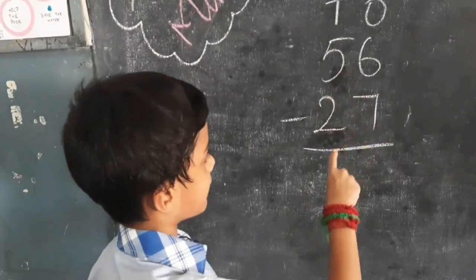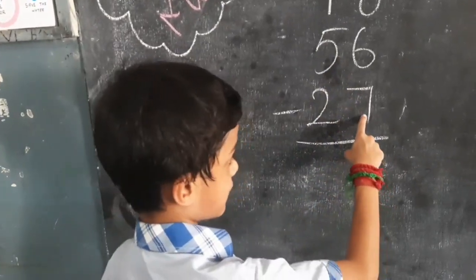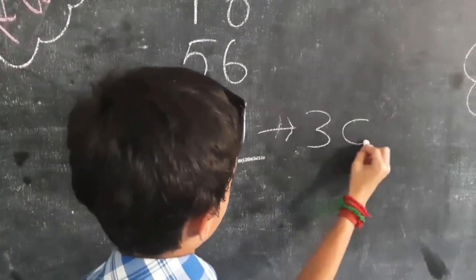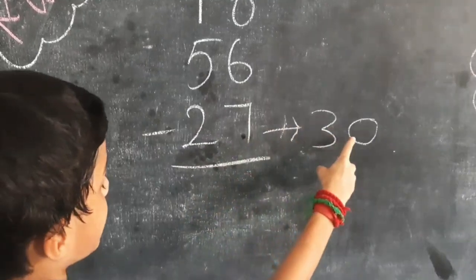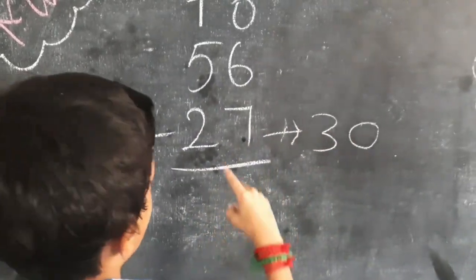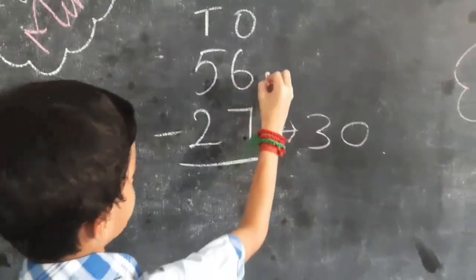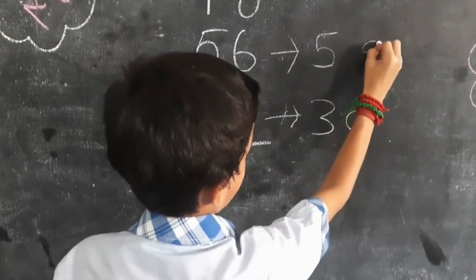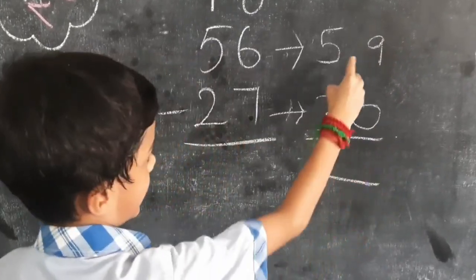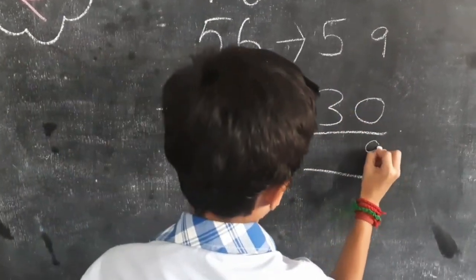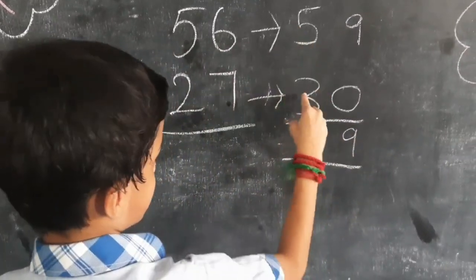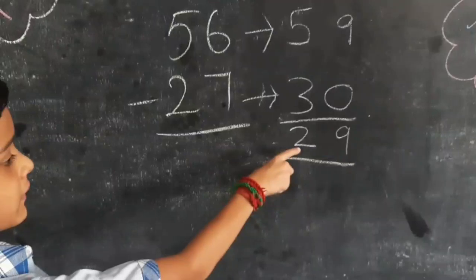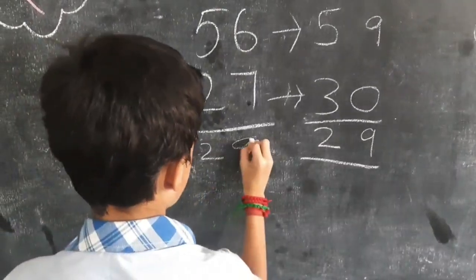56 minus 27. The nearest ten of 27 is 30. The difference between 27 and 30 is 3, so add 3 to 56 — 56 will become 59. Now subtract: 9 minus 0 is 9 and 5 minus 3 is 2. The difference is 29.